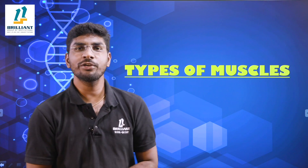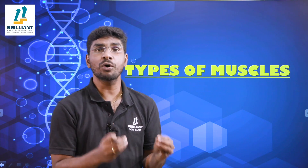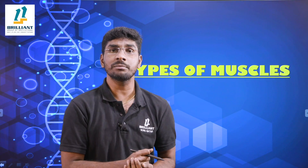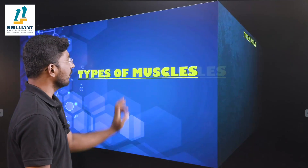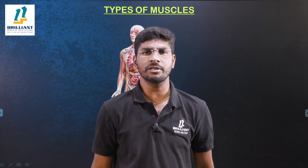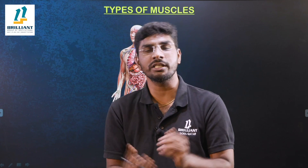Hello students, in this video class we are going to understand the types of muscle. This topic is from your 11th grade chapter on locomotion and movement — how many types of muscles are there, and what is the structure of skeletal muscle. The branch of science which deals with muscles is called myology. There are three different types of muscles present in our body.